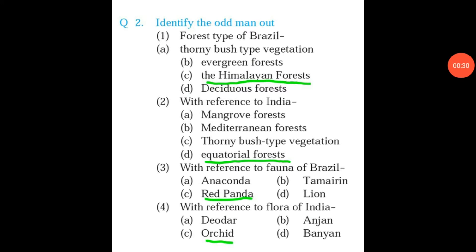This is question number 2 — Identify the odd man out. First, forest type of Brazil: answer is option C, the Himalayan forest. Second, with reference to India: answer is option D, Equatorial forest. Third, with reference to fauna of Brazil: answer is option C, Red panda. Fourth, with reference to flora of India: answer is option C, Orchard.